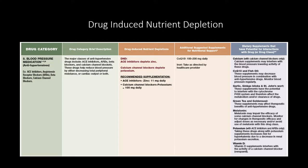Looking at the depletion chart, antihypertensives can deplete zinc — important for the immune system — and potassium. Suggested nutritional support includes CoQ10, and there's significant evidence that most categories of antihypertensive medications cause CoQ10 depletion. Supplements like CoQ10, fish oil, garlic, and ginkgo should be used with caution as they put patients at risk for bleeding.